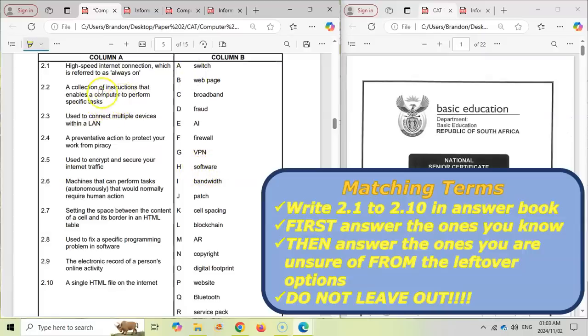And so what happens is you might think that that is A. So if you write down A as your answer for this question, when you get to the other questions, you might unintentionally not even think about A anymore because you've used it up, but you've used it up incorrectly.